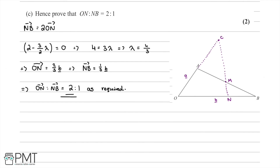This part of the question was worth 2 marks. We received our first mark for working out that lambda was equal to 4 over 3, and our second mark for concluding with the correct answer.